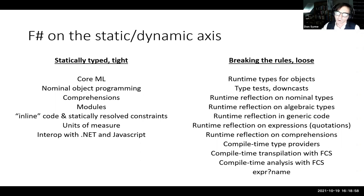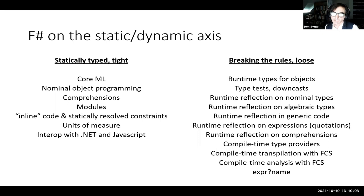On the static-dynamic axis, we want 80% or more of coding to be statically typed and tight. F-Sharp in its usage is a very tight language — you very rarely break the rules and only use dynamic features in fairly localized ways. You won't see a lot of type tests in F-Sharp code. Most of it drops out through the statically typed functional programming paradigm.